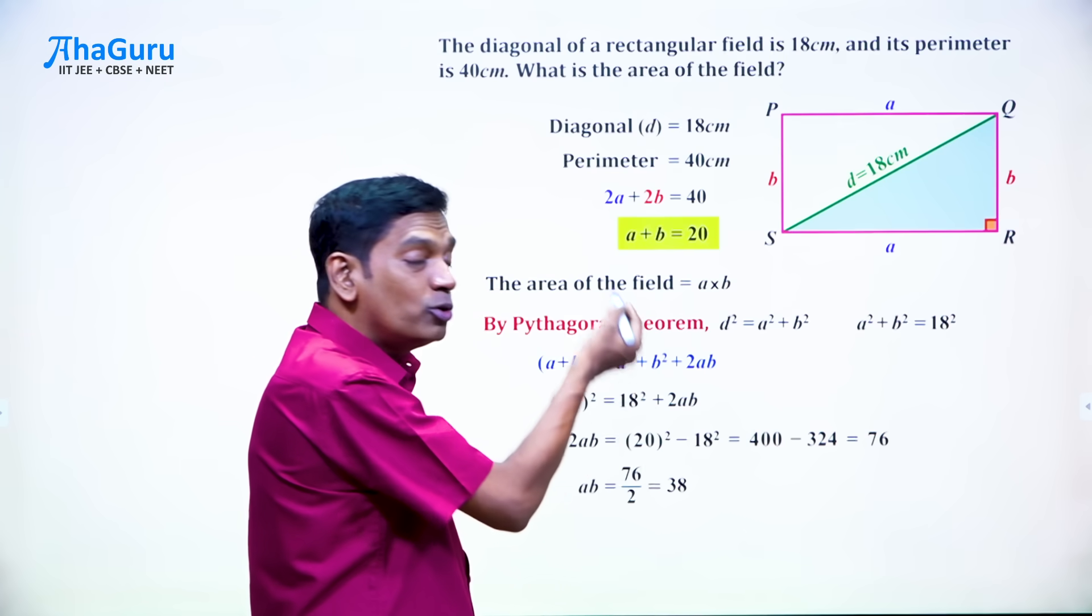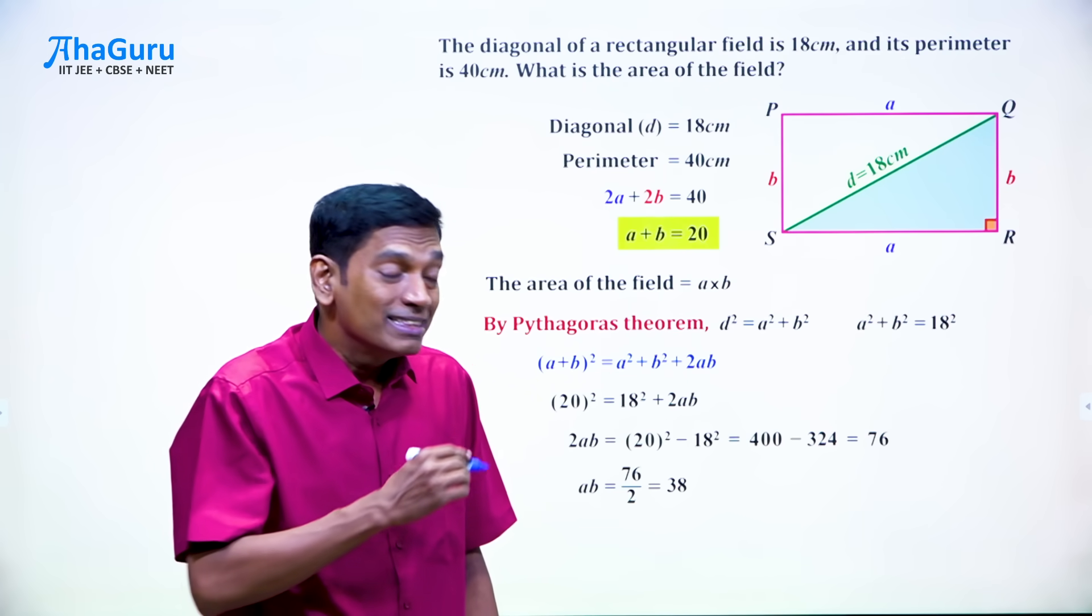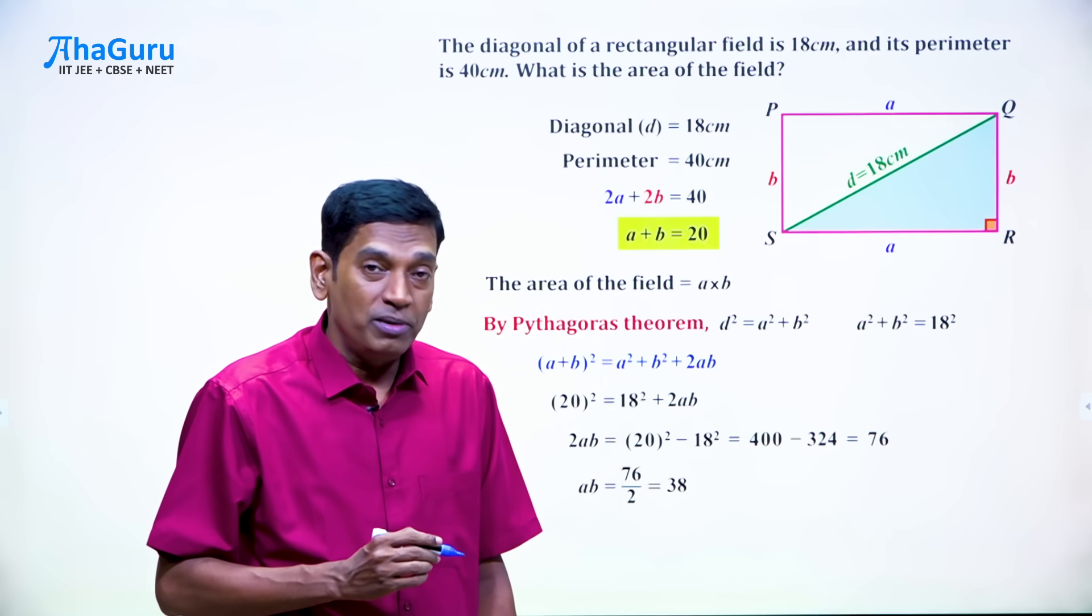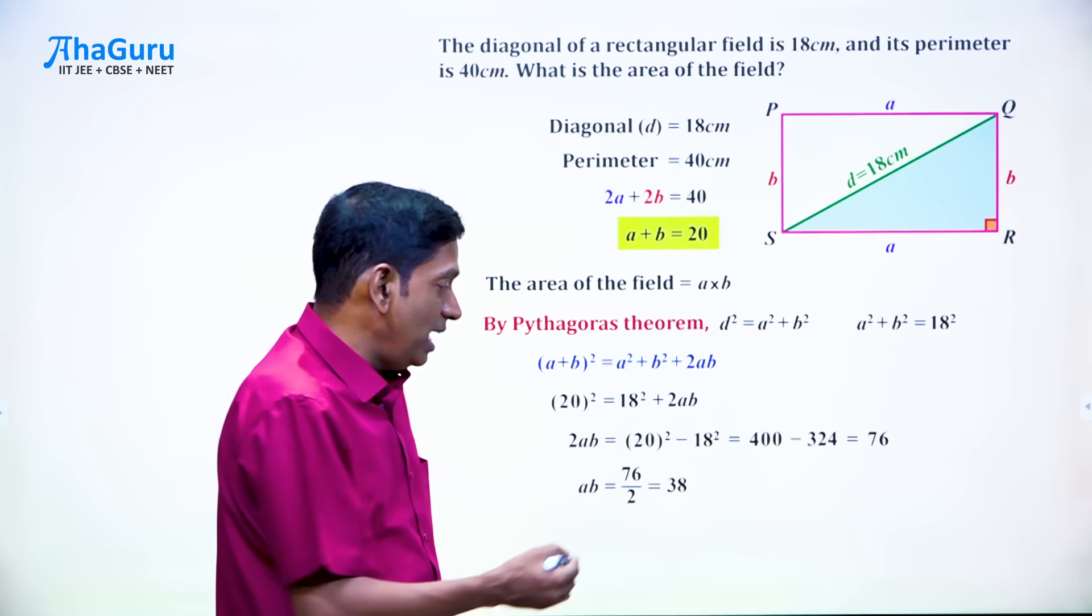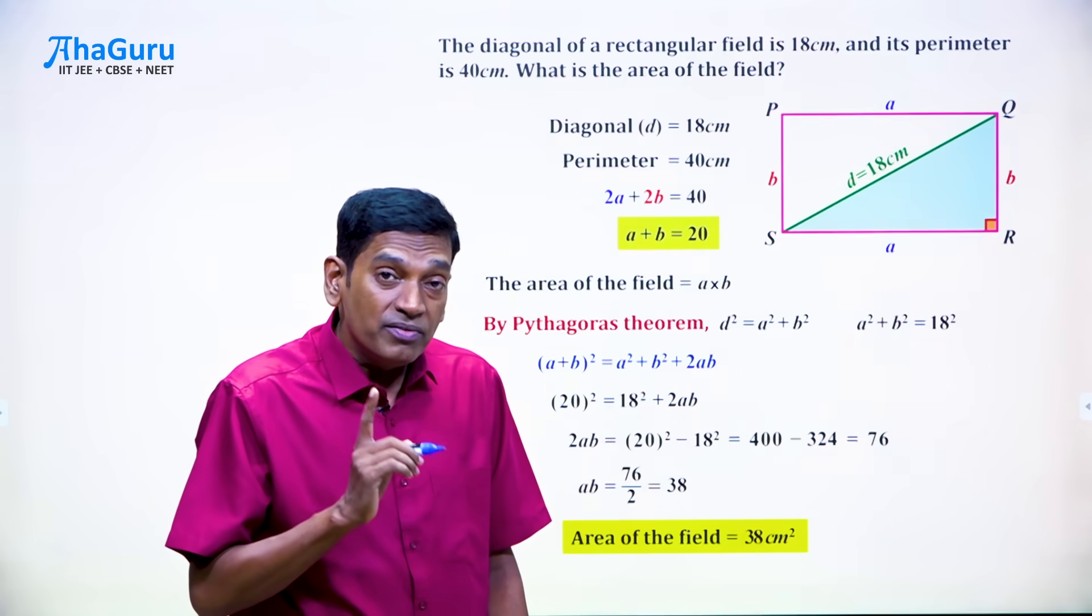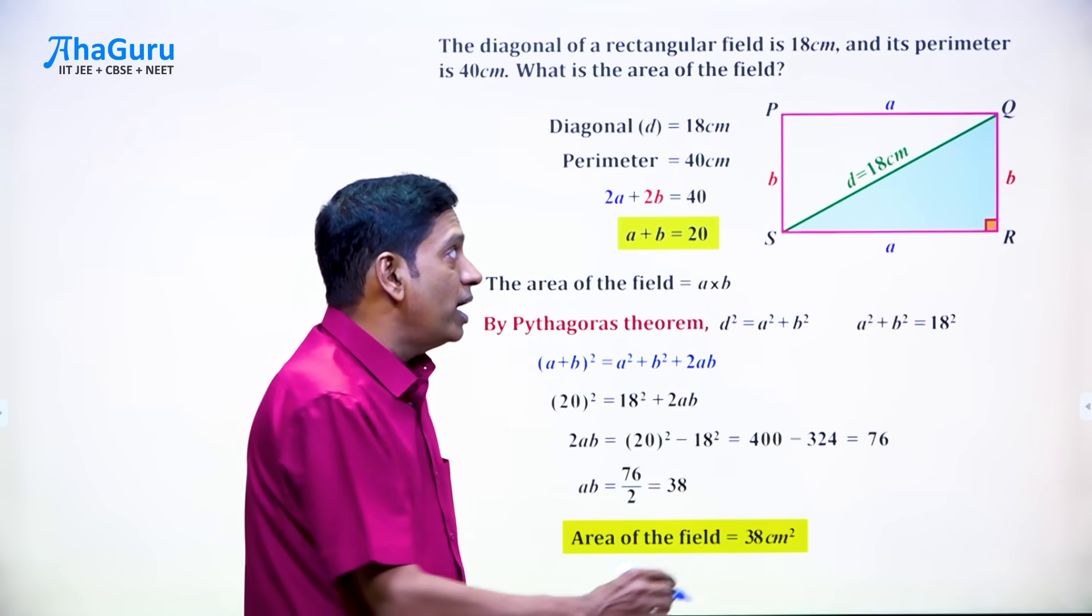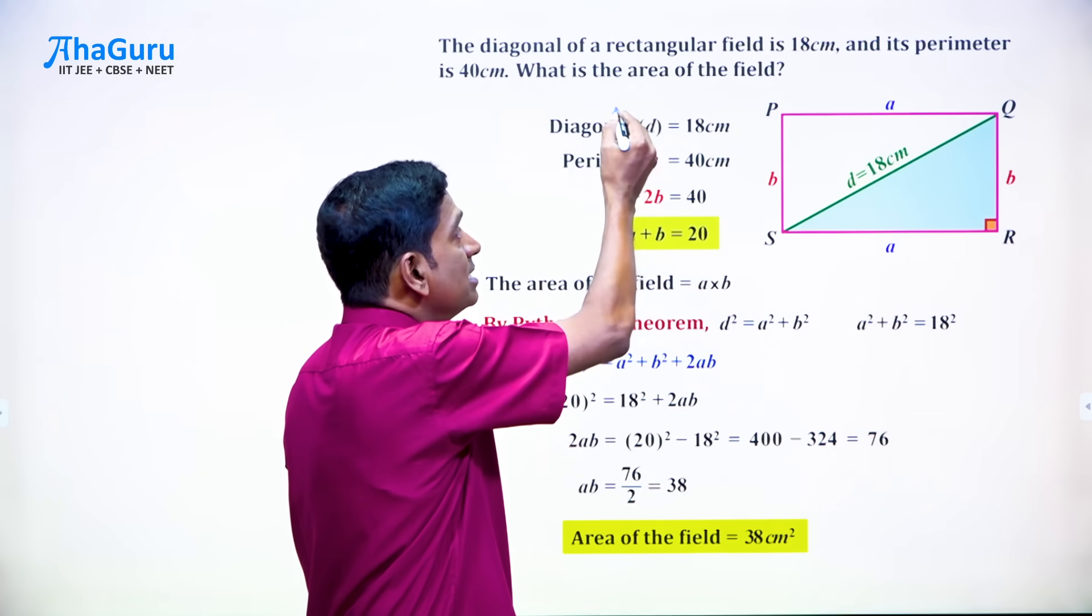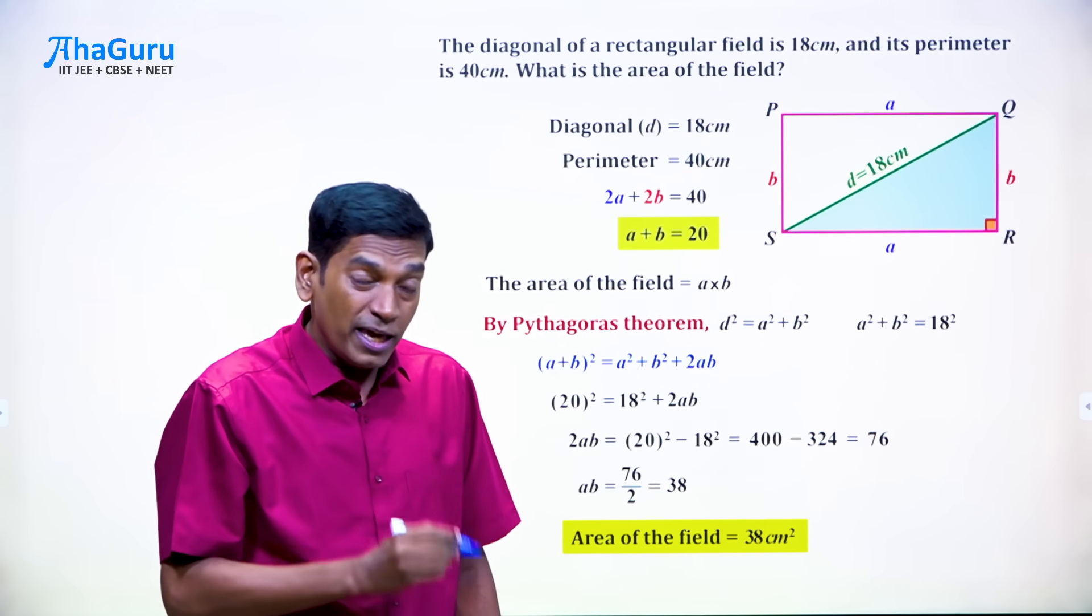In fact, we still don't know that. We know A plus B, we know A square plus B square. That is the beauty of this problem. That means we have the area which is what is asked in the question. So the area of the field, remember we have to put the correct units, it is 38 centimeter square because the diagonal is 18 centimeter and the perimeter is also given in centimeter.